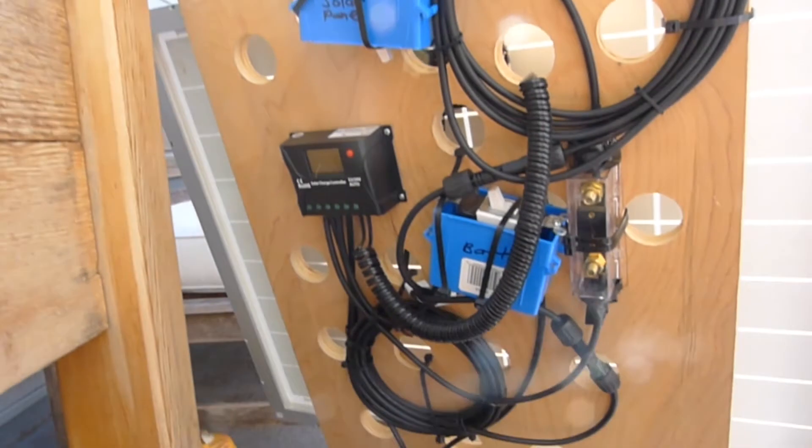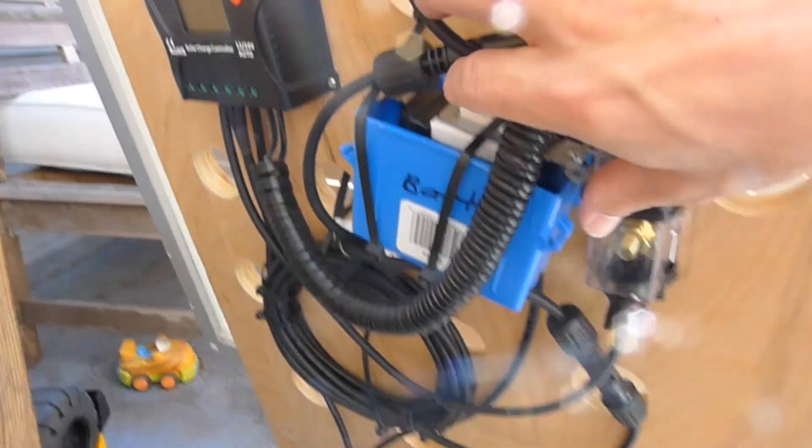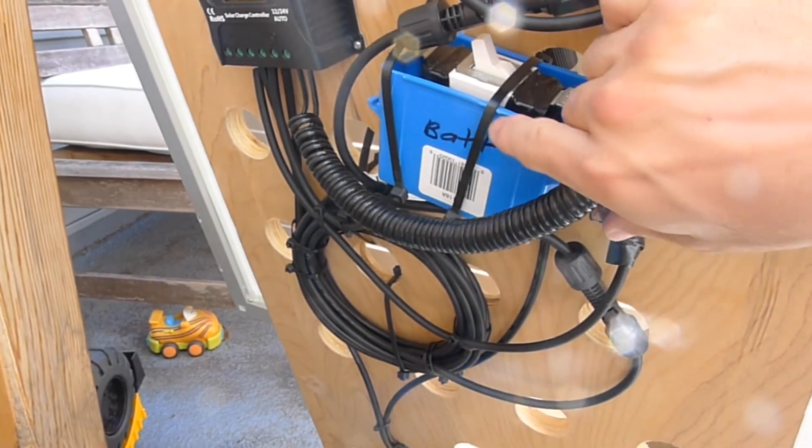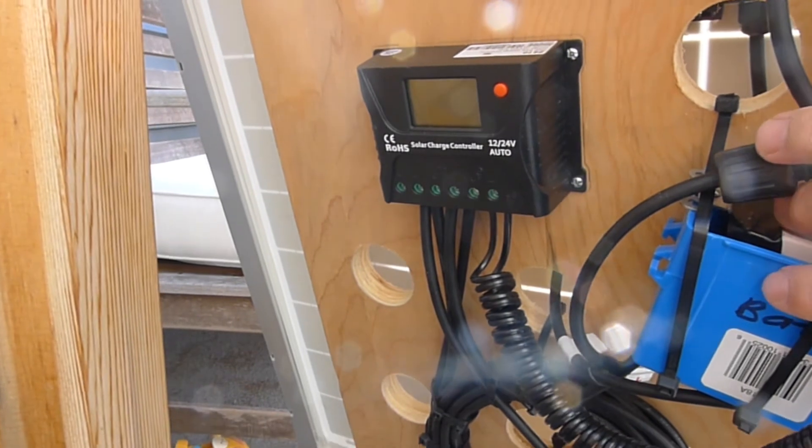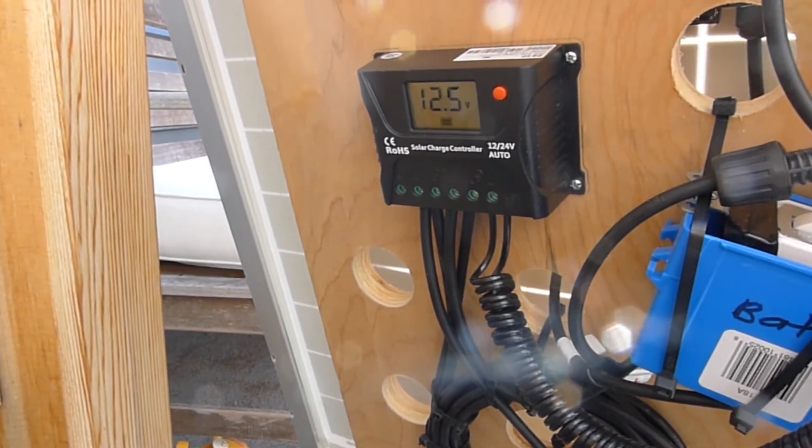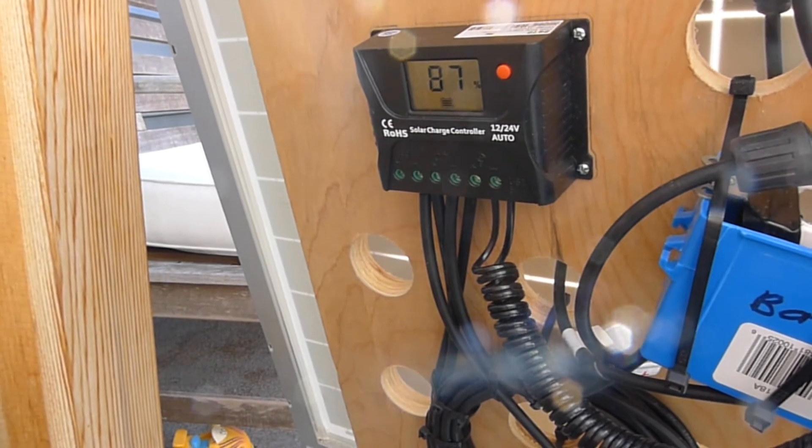You'll see this switch right here, it says battery. So we're going to turn that on. When I turn this on, you can see the solar controller now comes on and we are reading 12.5 volts.